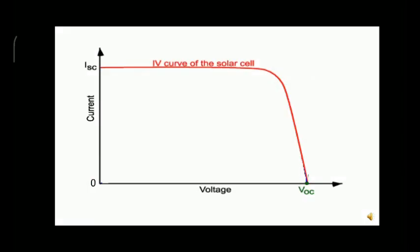This is the typical IV characteristics, or current-voltage graph, of a solar cell. In this graph, there is a VOC value, which means open circuit voltage. You will get VOC whenever the current inside the circuit is zero.